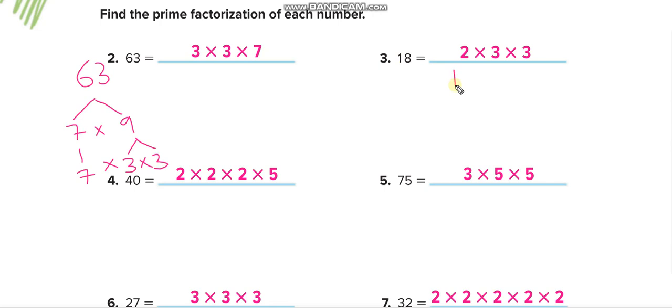Now 18. I can do 2 times 6, or I will do it two ways. Sorry, not 2 times 6, one second. There is a mistake. 2 times 9 and 3 times 6. Similarly, I cannot break 2 more, and this will be 3, and this will be 3 and 3. So 2 times 3 times 3 like this.